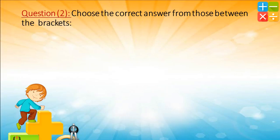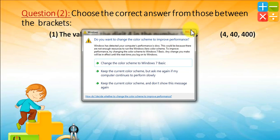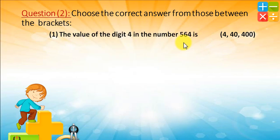Question number 2: choose the correct answer from those between the brackets. The value of the digit 4 in the number 564 is — 4, 40, or 400? It's 4, because it's in the units place. The value of 4 in 564 is 4, since it's in the units place and doesn't change.